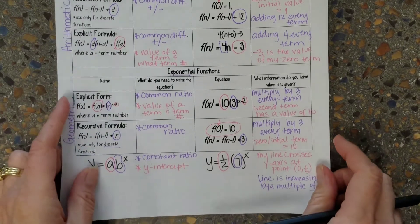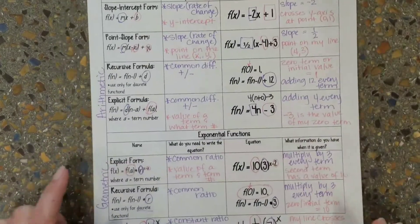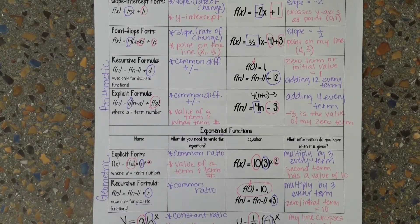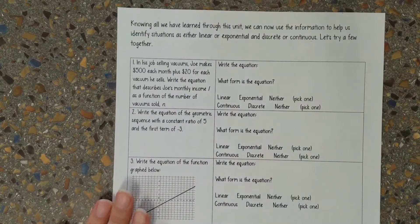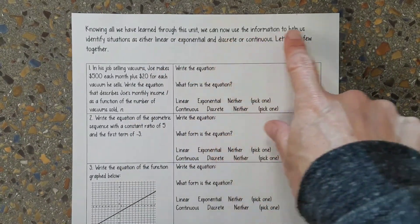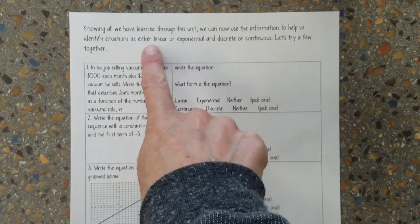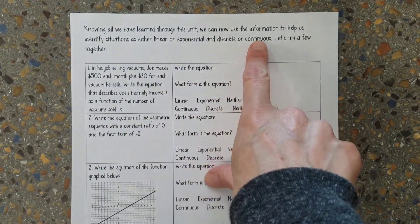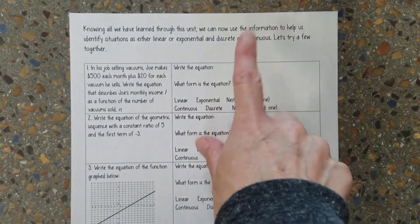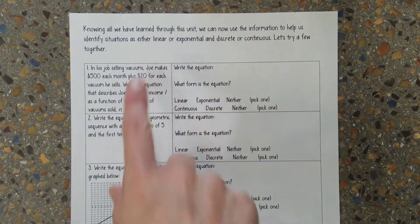I highly recommend doing this in different colors to really help yourself. So let's talk about some examples now. Keep that paper close because you're going to need to refer back to it. Knowing all we've learned through this unit, we can now use the information to help us identify situations as either linear or exponential and discrete or continuous — that means we're identifying two different things.